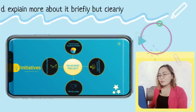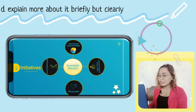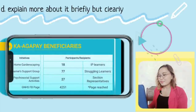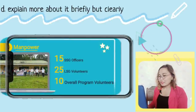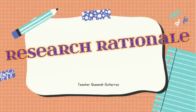That is why we came up with five Kaagapay Project initiatives such as Learner Support Group or LSG, Psychosocial Support Activities, Home Gardenscaping, and the creation of the GNHS official Facebook page. Each initiative has its own framework, specific objectives, and identified beneficiaries. We also have internal and external partnerships. The fifth outline is, of course, you need to present your research rationale.